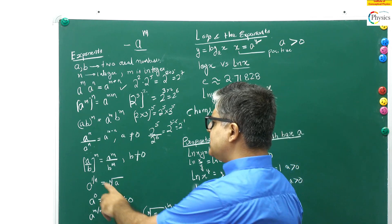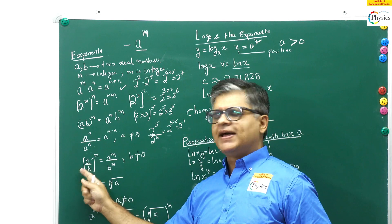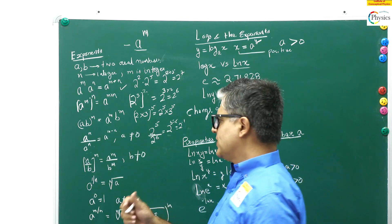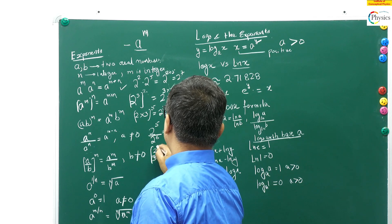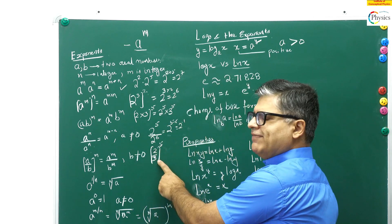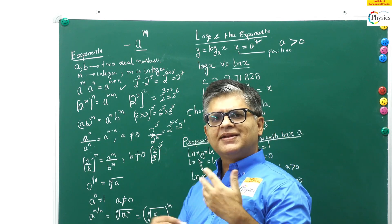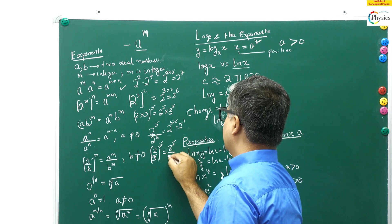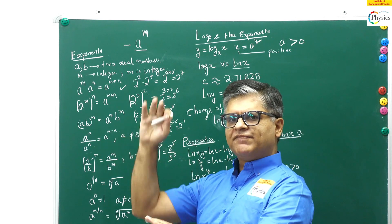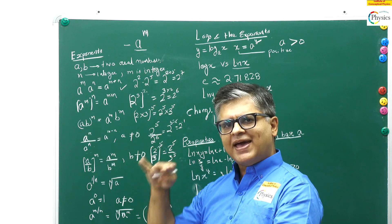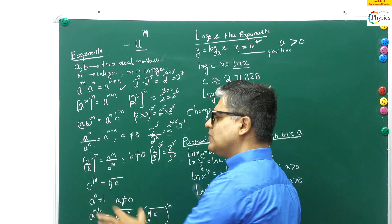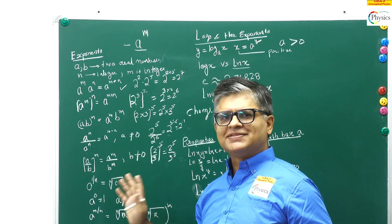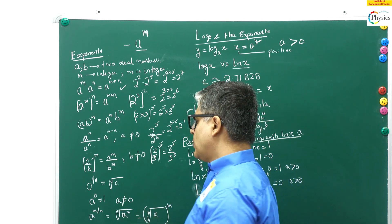The fifth property: if two bases are divided and have the same power, you can independently put the powers on each base. For example, (2/3) raised to power 5 equals 2 raised to power 5 divided by 3 raised to power 5. The bases can be separated when the power is the same. Students going into entrance examinations often have no clue about these signs, but they're very important to learn.